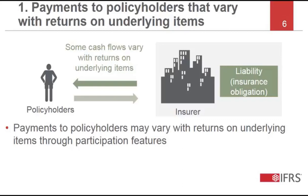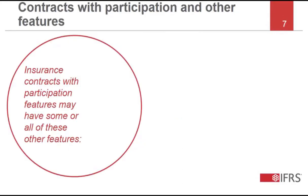Underlying items can comprise any items — for example, a reference portfolio of assets, the net assets of the entity, or a specified subset of the net assets of the entity. An insurance contract with participation features may also have any of the other three features we will be discussing in this webcast.